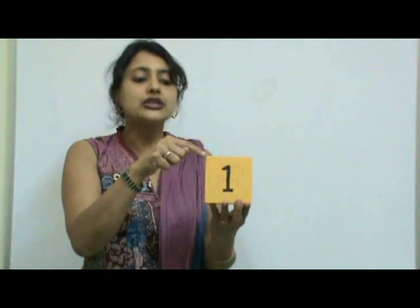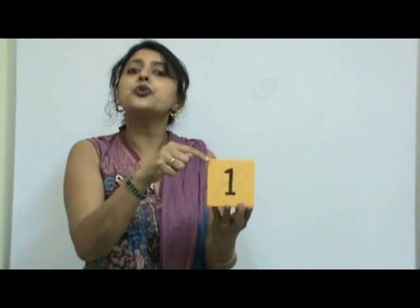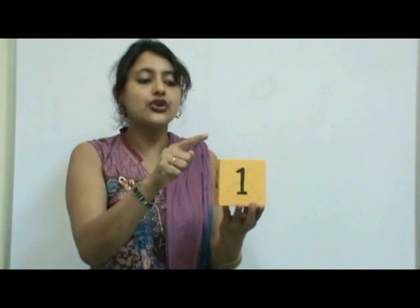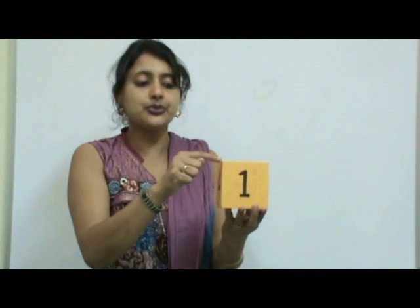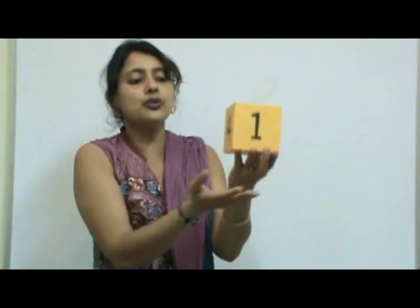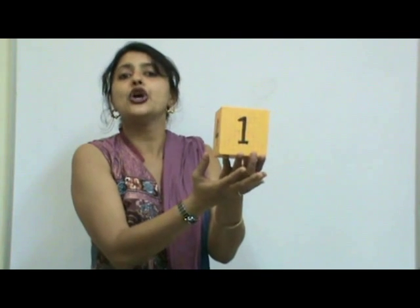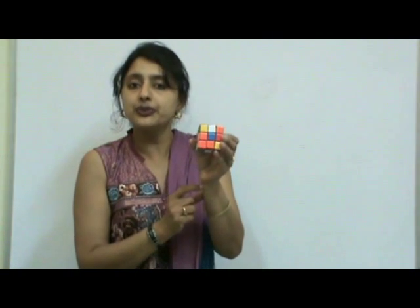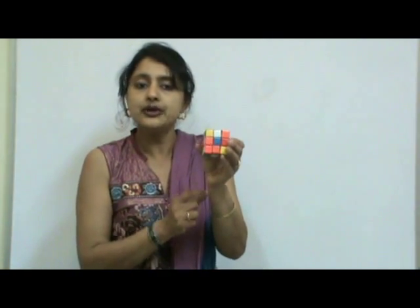The vertices are the pointed corners. Let us count how many vertices the cube has: four on the top and four below — so it has eight vertices. A favorite example is the Rubik's magic cube, as well as the dice used in board games.